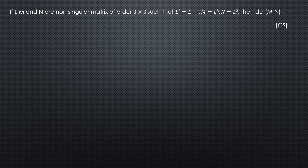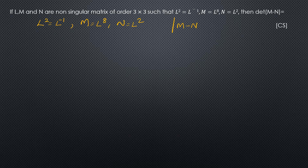If L, M, and N are non-singular matrices of order 3×3 such that L squared equals L inverse, M equals L raised to 8, and N equals L squared, find the determinant of M minus N.